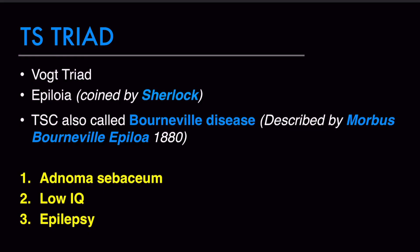A very favorite exam question is: what is the tuberous sclerosis triad? It is also called the Vogt triad or Epiloia — a term coined by Sherlock. Tuberous sclerosis complex is also called Bourneville disease, as it was first described by Morbus Bourneville in 1880. The tuberous sclerosis triad consists of adenoma sebaceum, low IQ, and epilepsy.